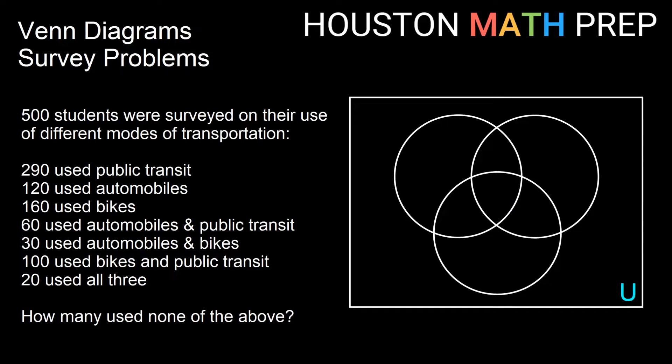All right, let's take this up a notch and look at a three-circle Venn diagram survey problem. We have 500 students total. They are surveyed on their use of different modes of transportation. So if you look through this list, you can see we have public transit, we have automobiles, and we have bikes. So if I just use the first letters of those, I'm going to label one of my circles P, I'll label one of them A for automobiles, and I'll use B for bikes. Now I have all of this information here, I need to figure out what I can use.